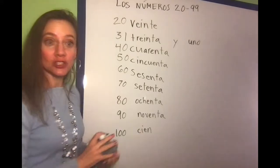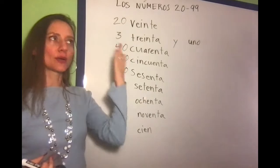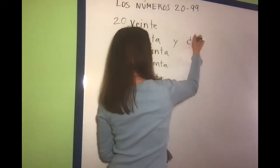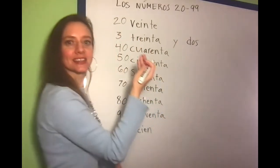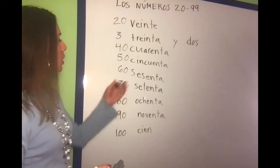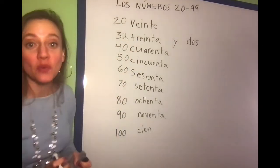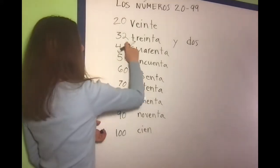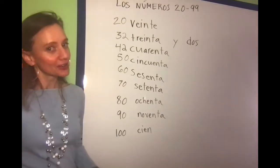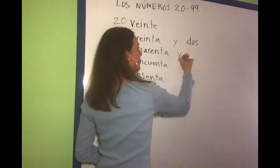So how would you say 32? Well, instead of treinta y uno you would think: how do I say two in Spanish? Treinta y dos. And what about 42? I'm literally going to do the same thing: cuarenta y dos.